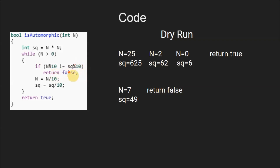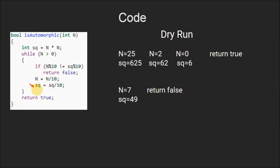If the last digit of n is not equal to the last digit of square, we return false, meaning the number is not automorphic. After the if condition, we re-initialize n by n divided by 10, which removes the last digit of n. We also re-initialize the square variable by square divided by 10, removing the last digit of the square. After the while loop completes, we return true, meaning the number is automorphic and the last digits of the number and its square are the same.